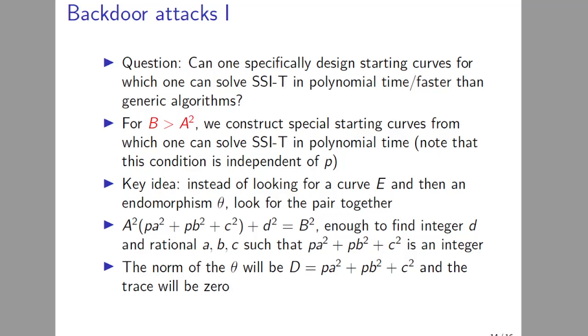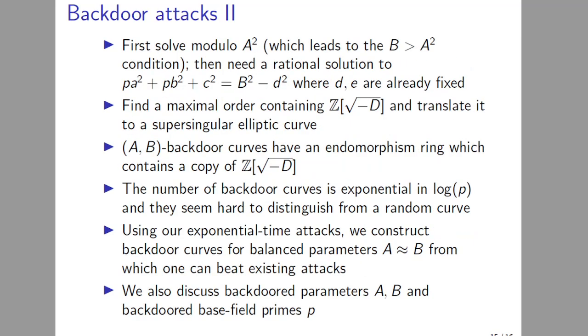How do you solve this equation? First again, you solve modulo A^2, which actually will give you the condition that B has to be bigger than A^2, because what you want is afterwards an equation where the right-hand side has to be positive. Because on the left-hand side, you will have p·a^2 + p·b^2 + c^2, which even if you choose rational a, b, and c will always be a positive number. And then once the right-hand side is positive, then the only other condition for this to be solvable over the rationals is that it has to be a quadratic residue modulo p, which happens half the time. So if it's not, then you choose a different d and you iterate as you did before.